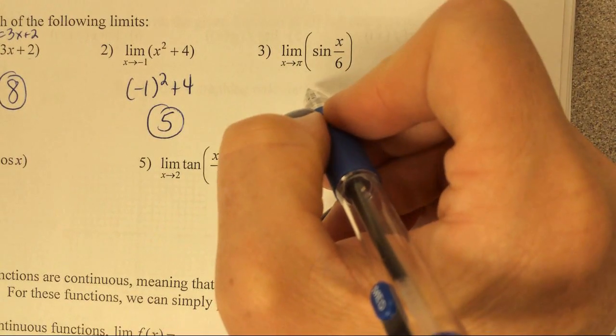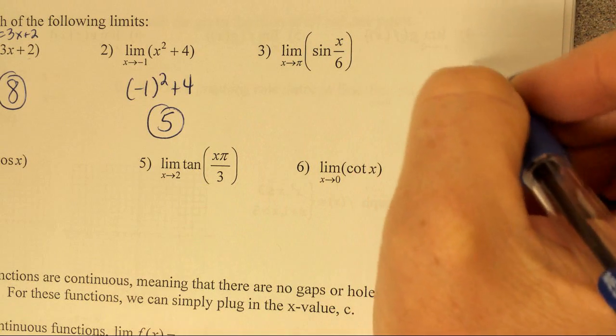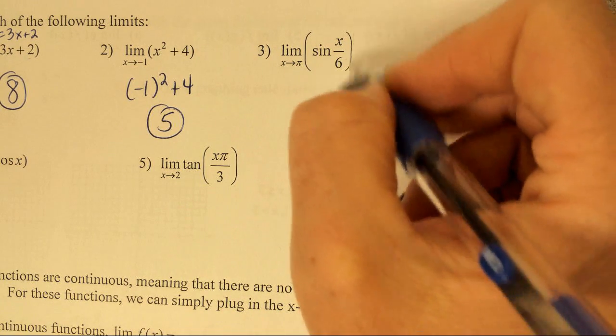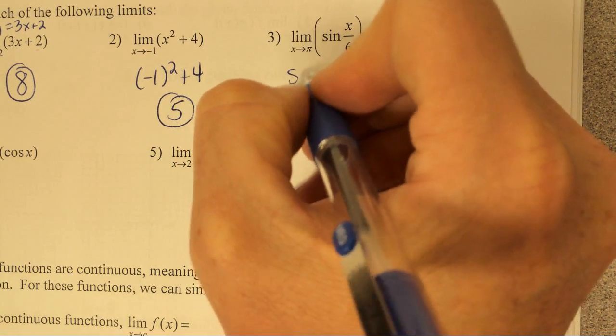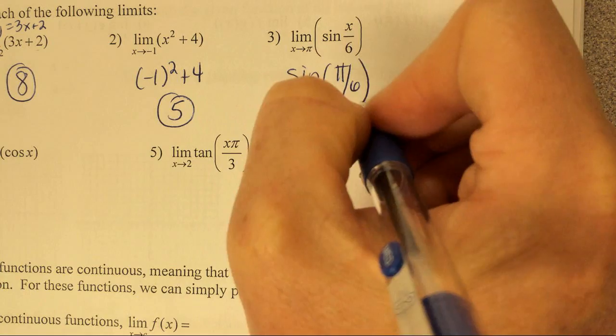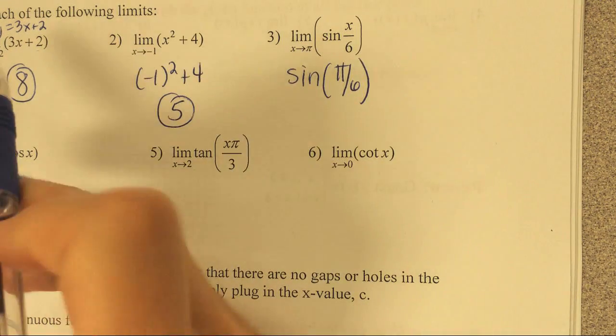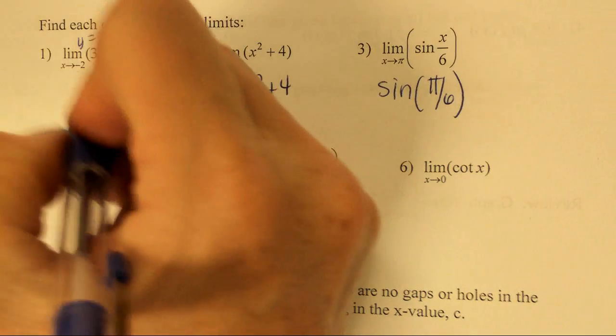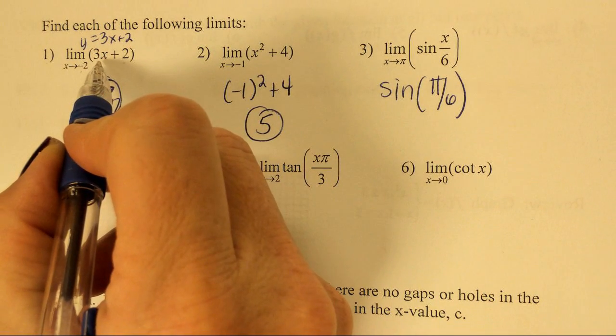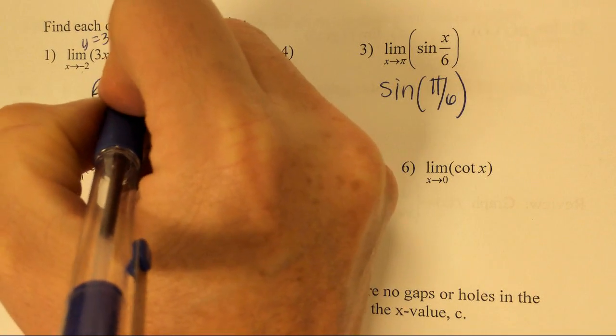Bless you. For the next one, we're going to think about the sine curve. Is the sine curve continuous? Yes, it is. So I'm just going to plug in the pi, the sine of pi over 6. Oh, I'm sorry, I missed the negative. I thought it was just a 2. Yep, it is a negative. Thank you. So it's going to be 3 times negative 2, which is negative 6, plus 2, which is going to be negative 4.